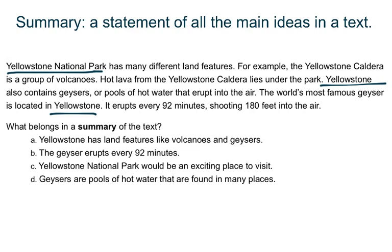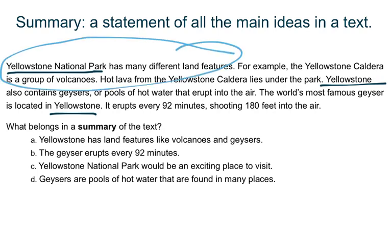The question asks me: what belongs in a summary of the text? In order to answer this, I need to figure out what the main ideas of this text are. It talks to me about hot lava and geysers, but mostly it teaches me about the different things in Yellowstone National Park. In fact, the main idea of this paragraph is actually stated as a complete sentence — it's the first sentence: Yellowstone National Park has many different land features. As I look in this text, I notice that it talks about two main land features: it talks about the volcanoes and it talks about the geysers.